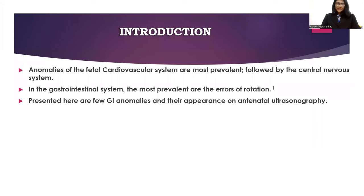Introduction: anomalies of the fetal cardiovascular system are most prevalent, followed by the central nervous system. In the gastrointestinal system, the most prevalent are the errors of rotation. Presented here are a few GI anomalies and their appearance on antenatal ultrasonography.